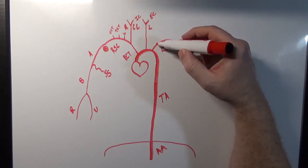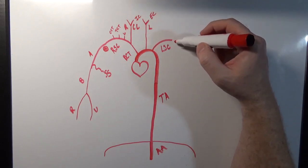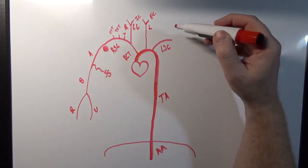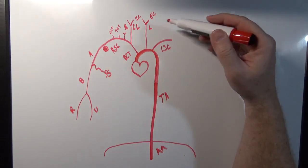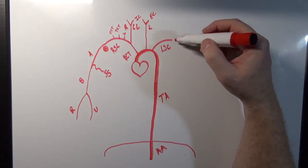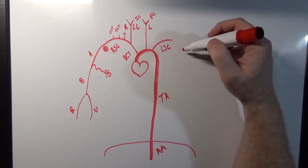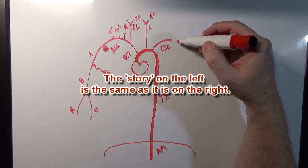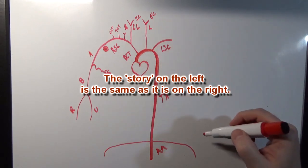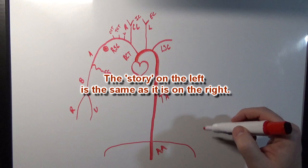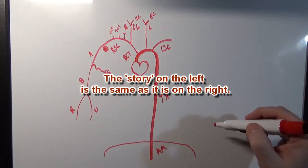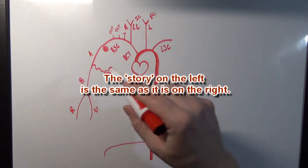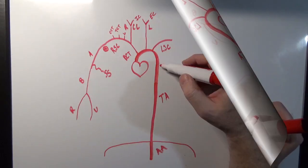This left subclavian is going to do the same thing as the right subclavian — it's going to have a vertebral artery, a thyrocervical trunk, and a costocervical trunk. Once it passes the first rib, the name is going to change to axillary and so on, all the way down the left arm. Since it's the same, I'm just going to leave it like this.